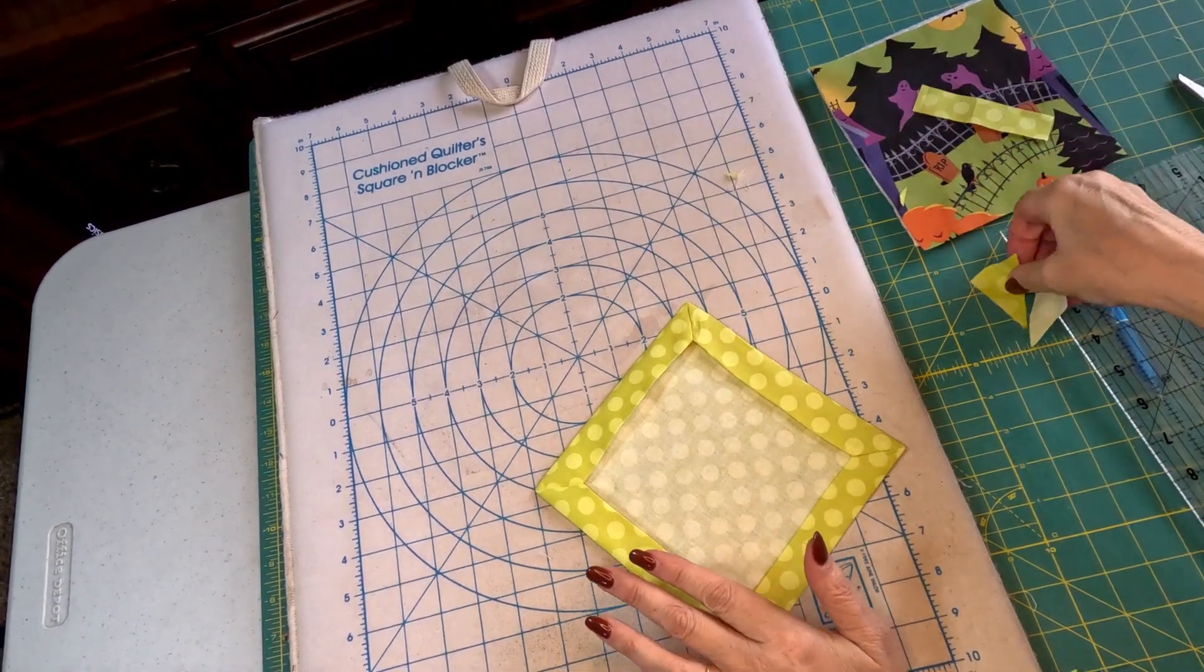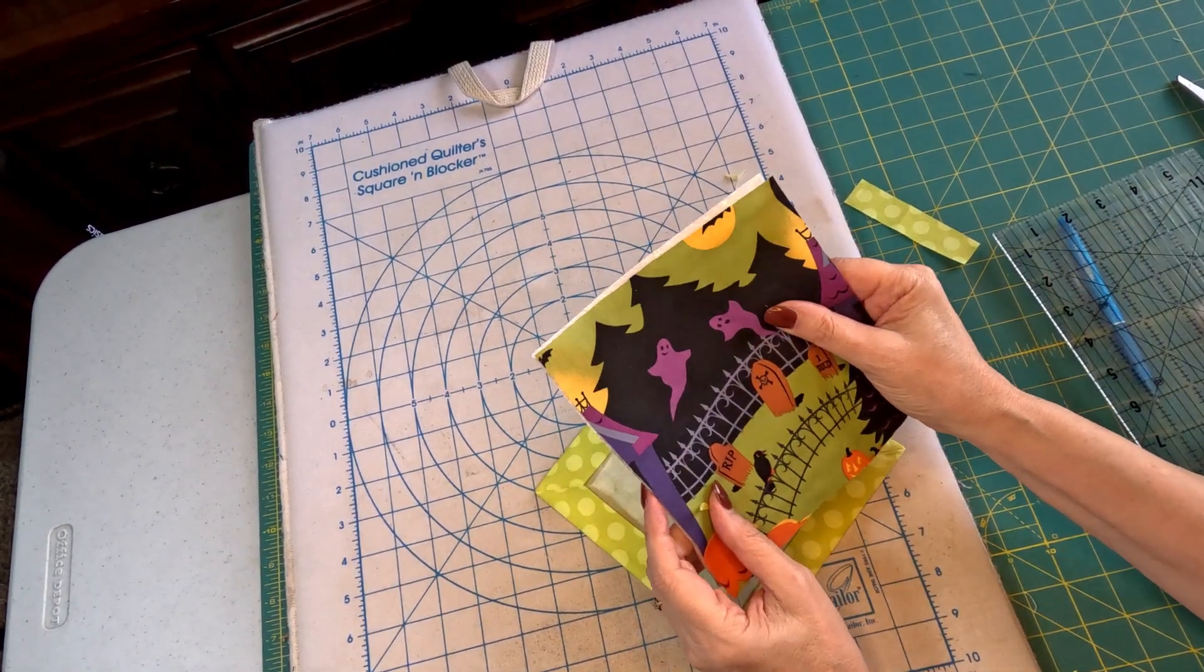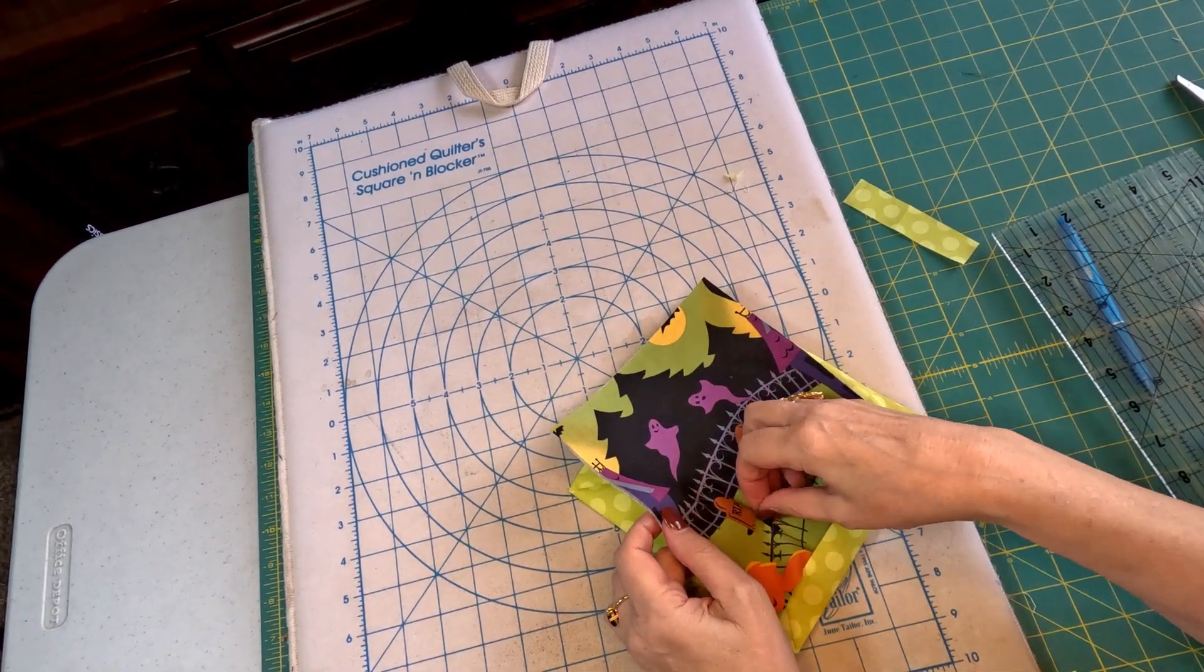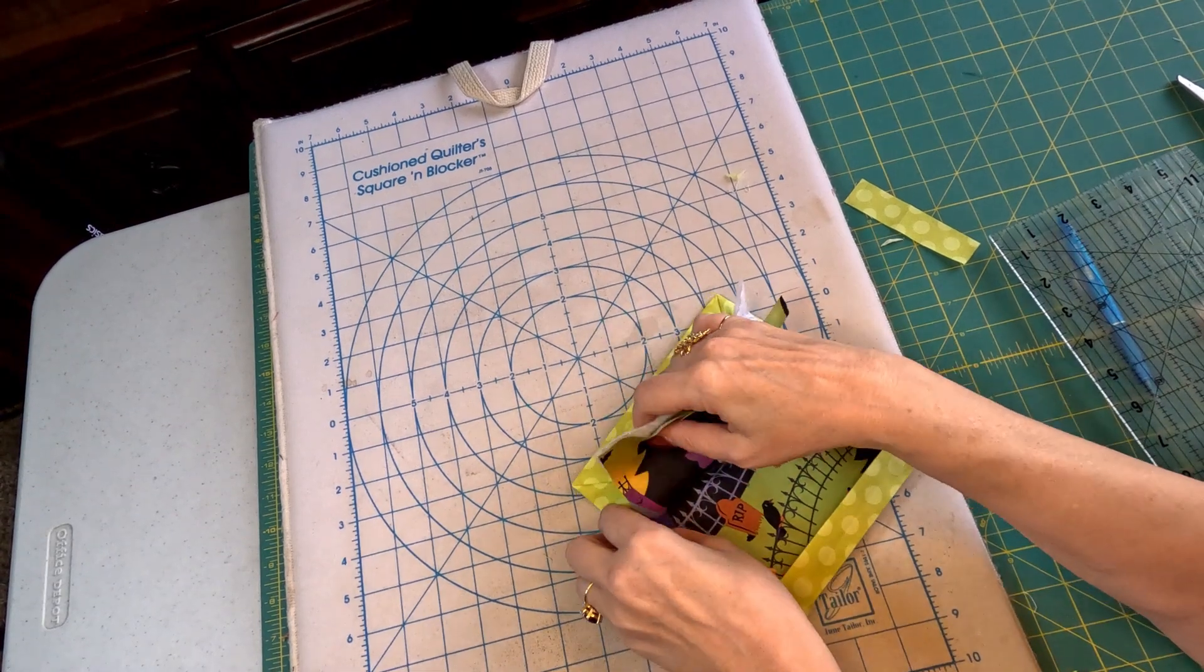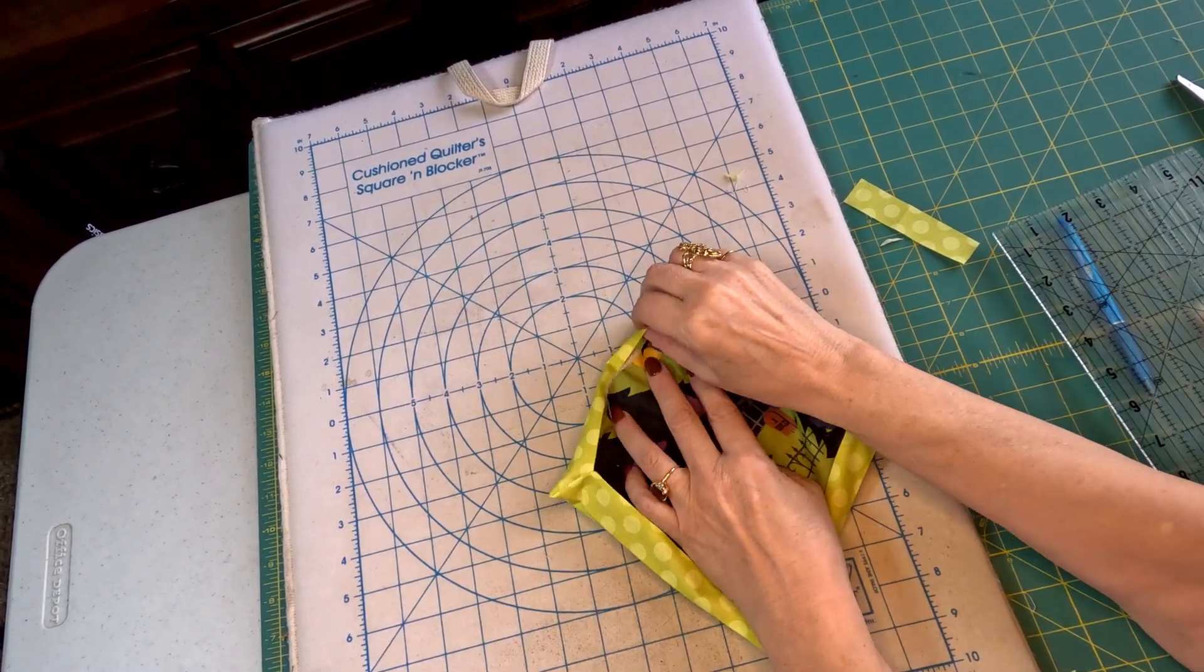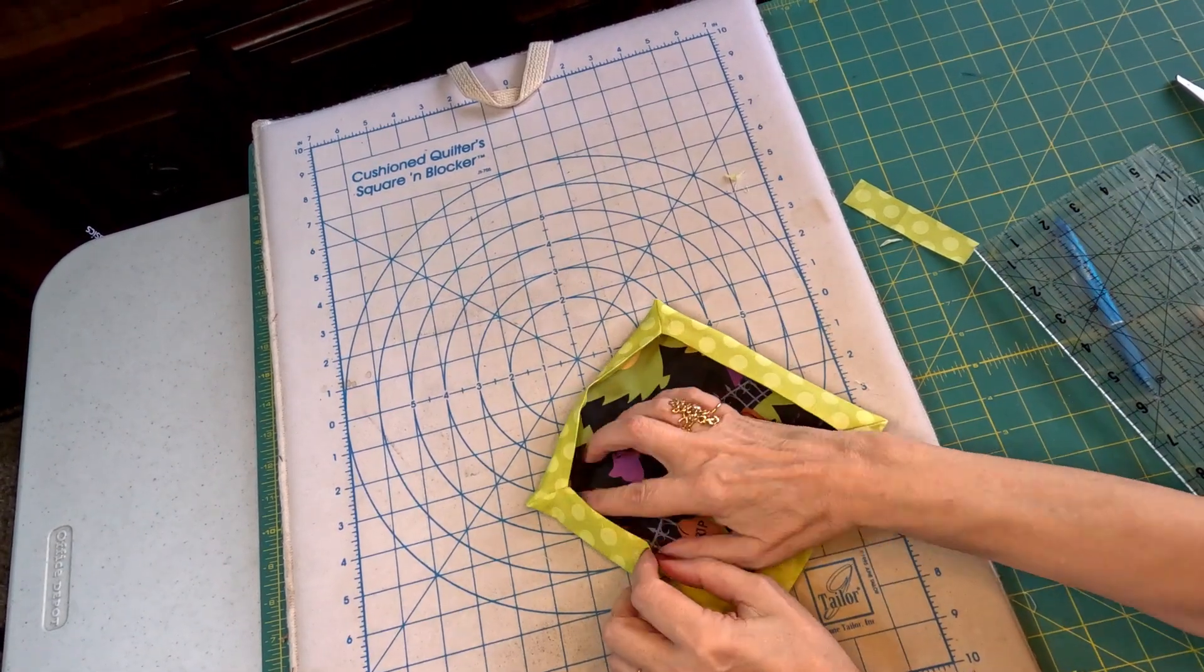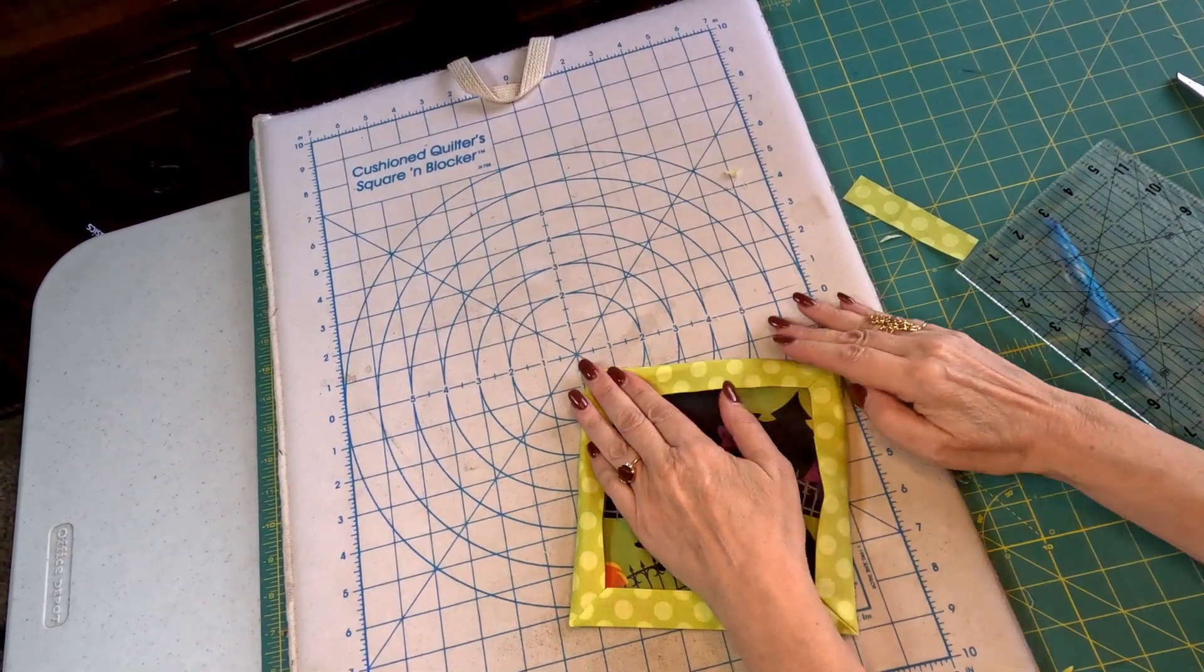Now then, we just take our fussy cut piece and our Insulbrite, and we insert it into our picture frame. And if you find out it's too big, just trim it down a little bit.